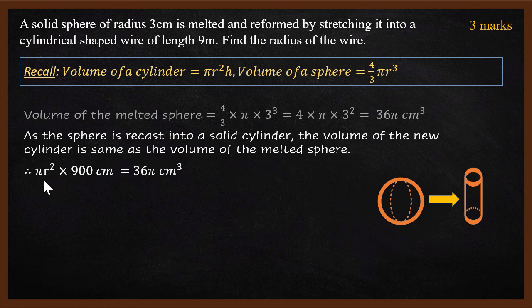Therefore, πr² multiplied by 900 cm is the same as 36π cm³. This is the important equation. Let's find out what we have written here. Where did we get this πr² times 900 cm? πr²h is the volume of a cylinder. r we don't know, which is what we have to find.